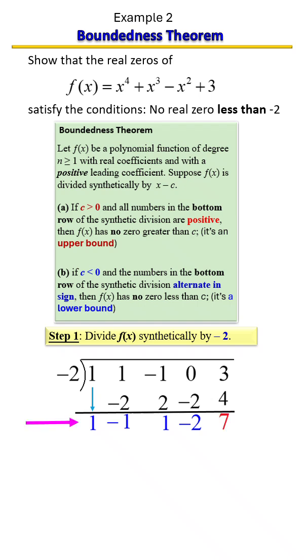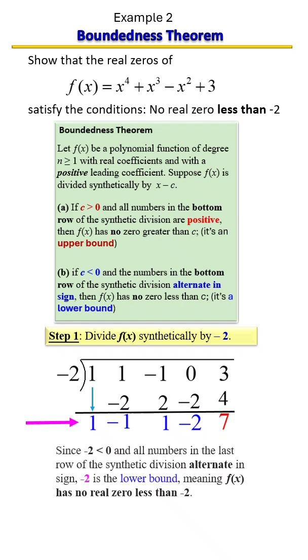If we take a look at the bottom row, you have positive, negative, positive, negative, positive. So they alternate in sign. And that means that this polynomial has no real zero less than negative two. And negative two is our lower bound.